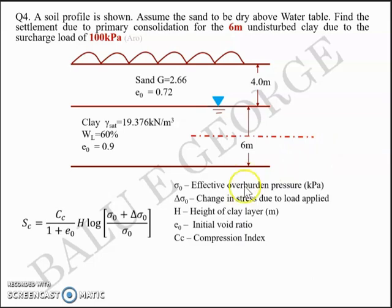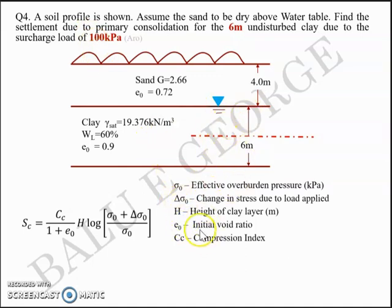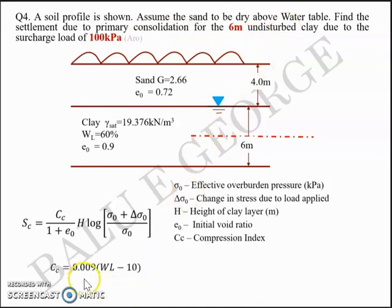We use the equation: Settlement = Cc / (1 + E₀) × H × log((σ₀ + Δσ₀) / σ₀), where σ₀ is the effective overburden pressure at the mid layer of the clay, Δσ₀ is 100 kilopascals, H is 6 meters, and E₀ is 0.9. Cc is not directly given; instead, liquid limit is given as 60% and the clay is undisturbed. So Cc = 0.009 × (liquid limit − 10) = 0.009 × (60 − 10) = 0.45.